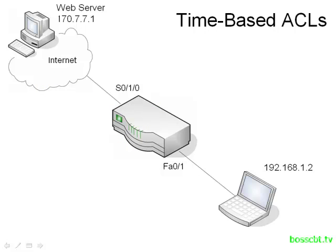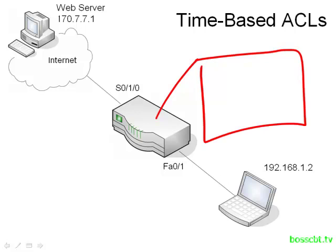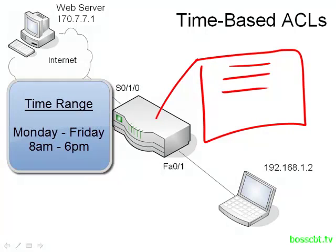With the time-based access list, we get some different functionality from the router. Basically, we're enabled to apply certain access list statements automatically but only during specified times. On our router, let's say we have an access list with some basic security entries. However, during some days, we want to prevent certain users from getting to certain websites. So we create a time range that defines the hours of the day or the days of the week that we want the user to be prevented from accessing that web server. Then we create some statements that we want applied to the access list during that time and associate those two.